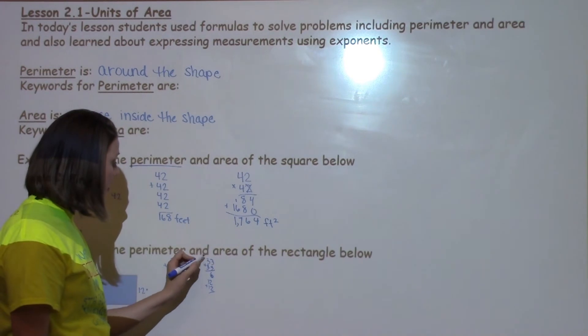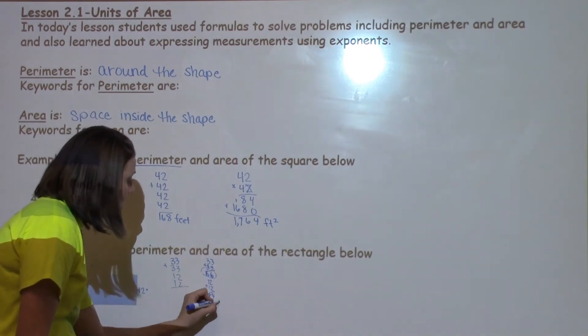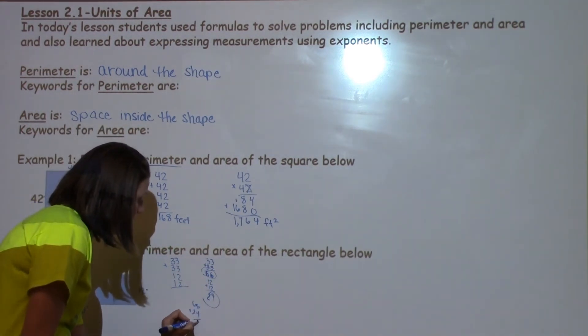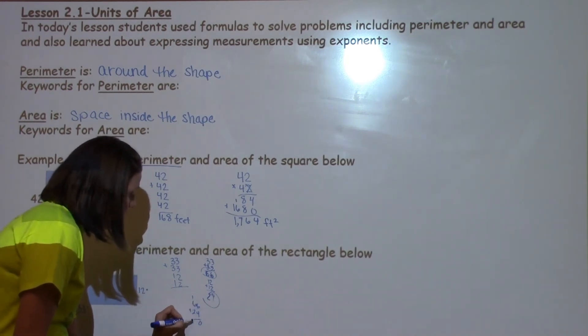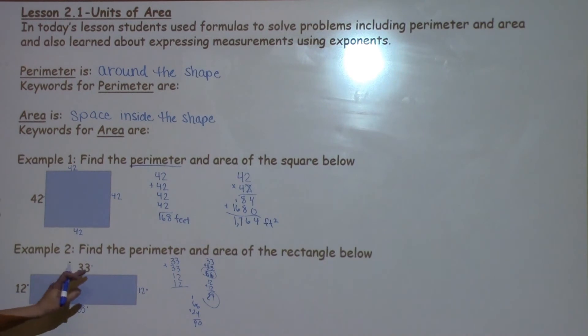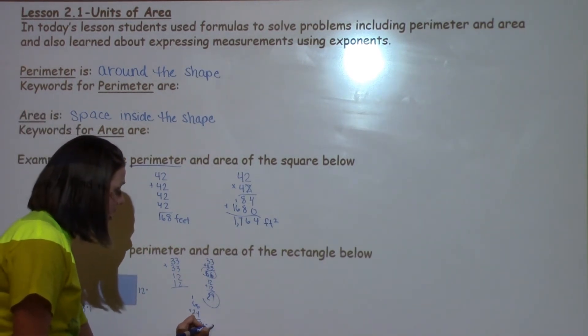So 3 plus 3 is 6, 3 plus 3 is 6, 2 plus 2 is 4, and 1 plus 1 is 2. So I need to take these two numbers that I have, 66 plus 24, which is going to give me 90. When I look at my label, I know I have inches. This is my perimeter, so I'm just going to write down inches.